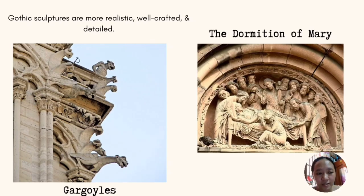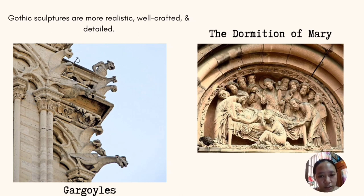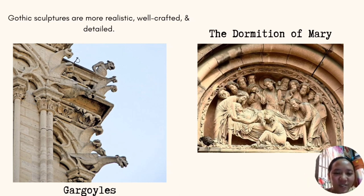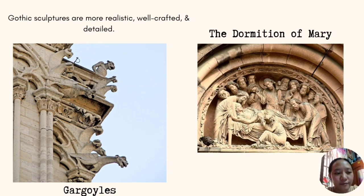Unlike Romanesque sculpture, Gothic sculpture is more realistic, well-crafted, and detailed. Gothic sculpture was closely tied to architecture since it was used primarily to decorate the exterior of cathedrals and other religious buildings. Gargoyles have become one of the most distinctive features of Gothic architecture, originally designed in 13th century French architecture as a means of disposing of water.